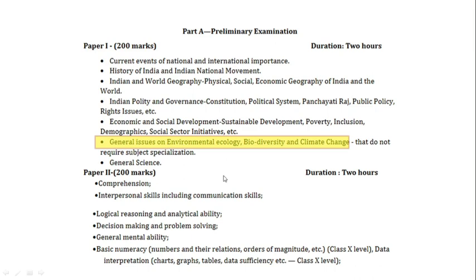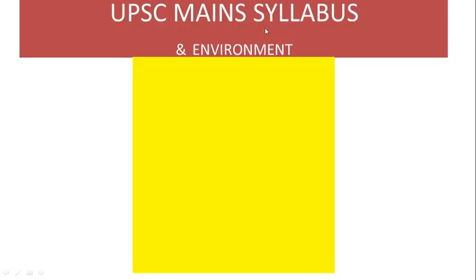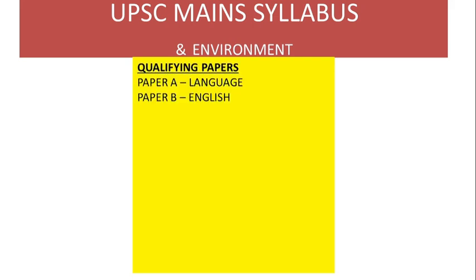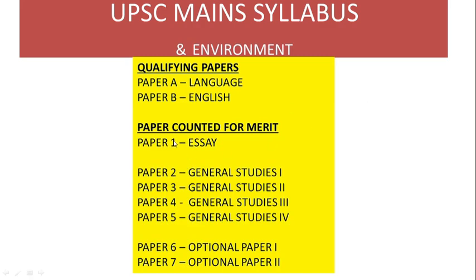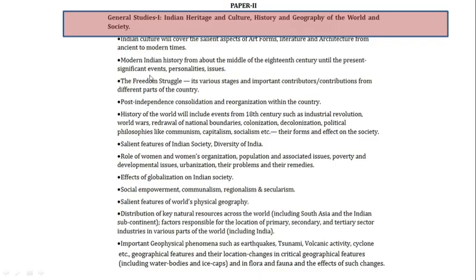Paper 2 judges students' ability to logically reason, their decision-making power, problem-solving skills, and mental ability. The UPSC Mains syllabus includes different papers: qualifying papers in English and one language, and merit-counted papers including Essay, General Studies 1, 2, 3, 4, Optional Paper 1, and Optional Paper 2.